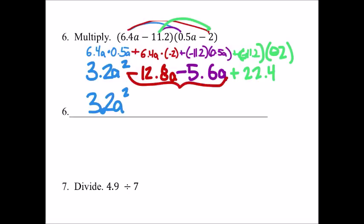But I have these two a's right here: negative 12.8a minus 5.6a, negative 18.4a. And then our constant doesn't have any other like terms either. This one has a degree of 2 and this one has a degree of 1. Since they're differing degrees, we can't combine those.